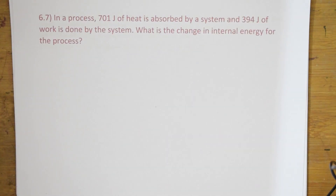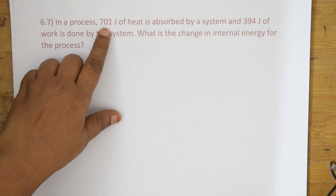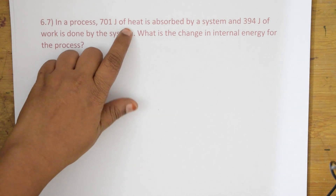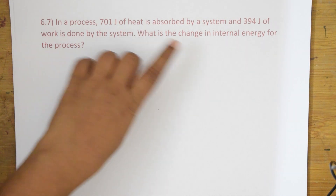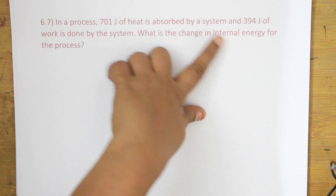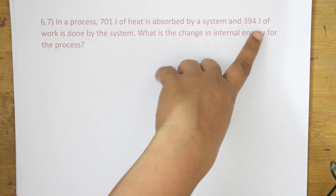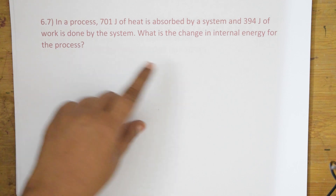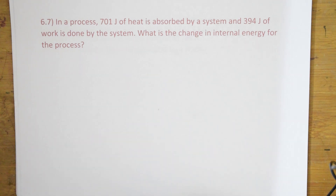Let's see question 6.7. In a process, 701 joules of heat is absorbed by a system and 394 joules of work is done by the system. What is the change in internal energy for this process?